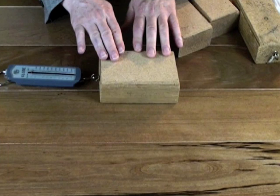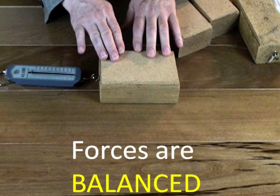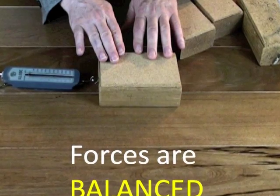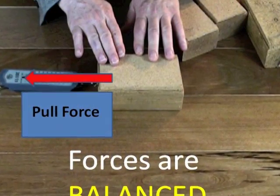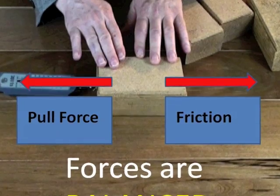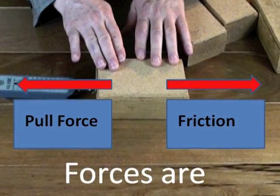Now if I pull something at constant speed, the forces are balanced. Constant velocity means forces balanced. The pull force must equal the friction. This is how we can measure the friction.